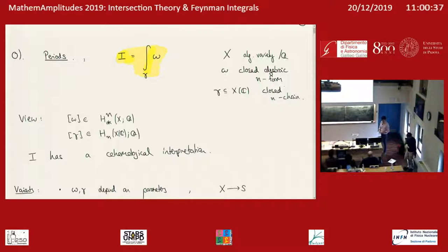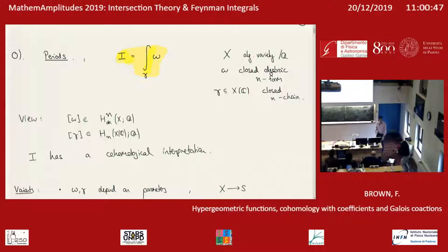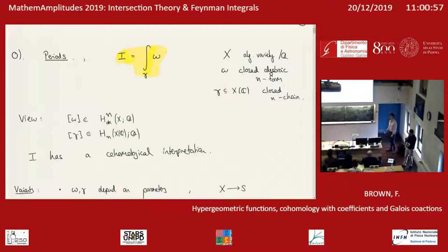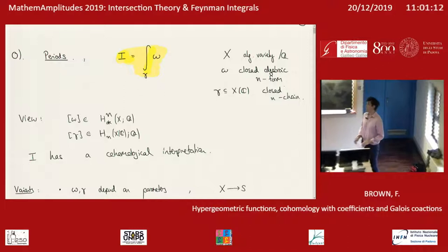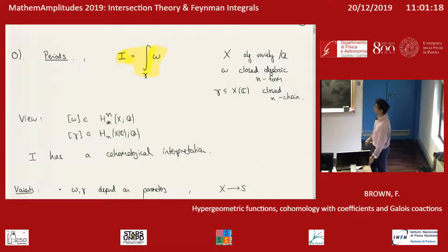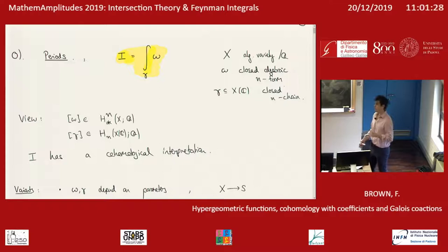Welcome back to the Downward Mornings section. The next talk is from Francis Brown. The title is Hypergeometric Functions, Cohomology with Coefficients and Galois Co-Actions. Thank you very much for the invitation. It's wonderful to come to this beautiful city and participate in this great workshop. I'm afraid I'm not going to say anything new compared to what I said at Amplitudes in Dublin, so my apologies if you already heard a similar talk. But I may say some small remarks that may be of interest to some of the mathematicians and also some of the physicists.